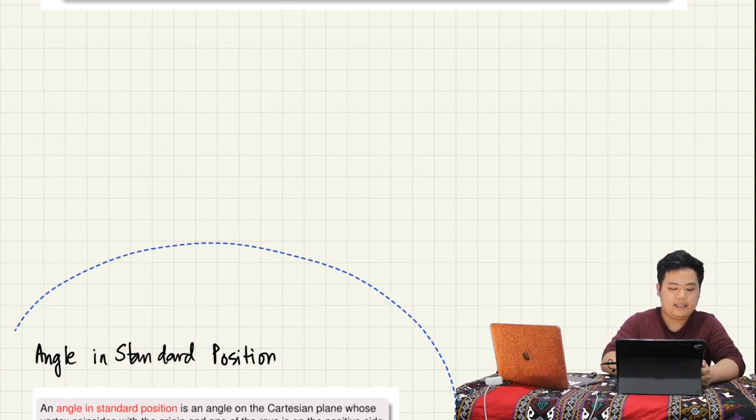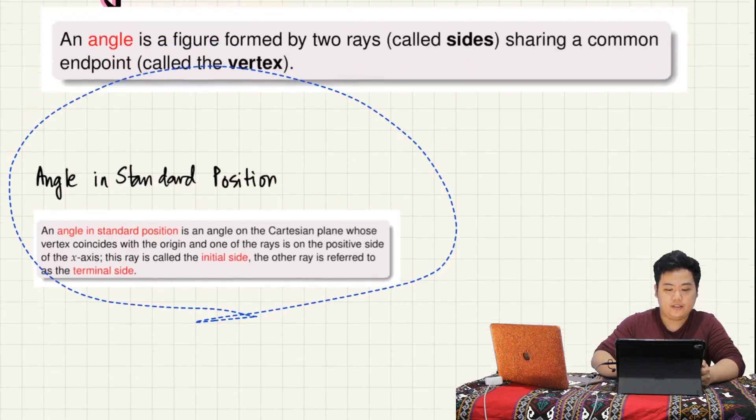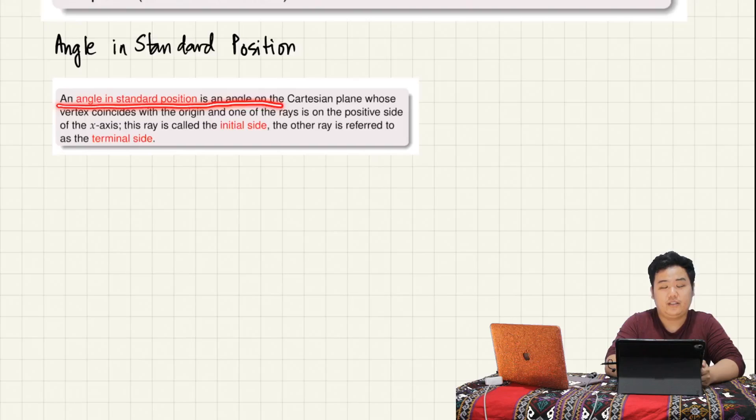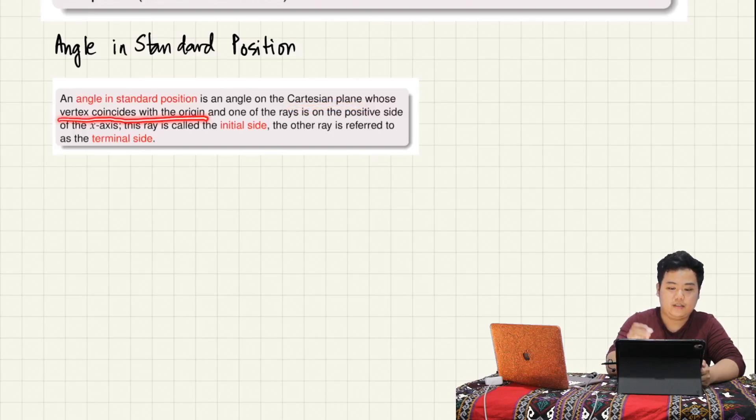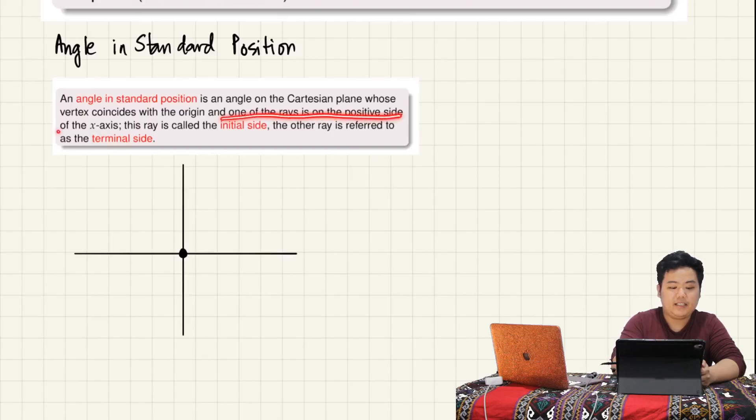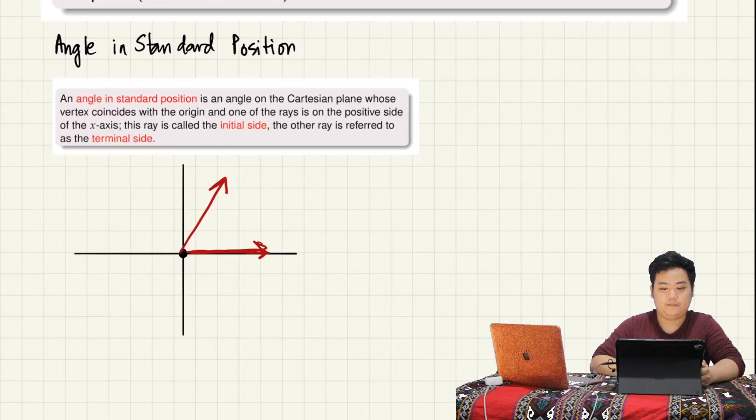Ano naman ang ibig sabihin natin sa angle in standard position? An angle in standard position is of course an angle, pero nasa Cartesian plane siya. And yung vertex niya coincides with the origin. Let us draw. This is our y-axis, x-axis. Yung vertex niya andyan. And one of the rays is on the positive side of the x-axis. Yung nasa positive side ng x-axis, yung tinatawag natin initial side in this case, and yung isang ray ay yung terminal side.